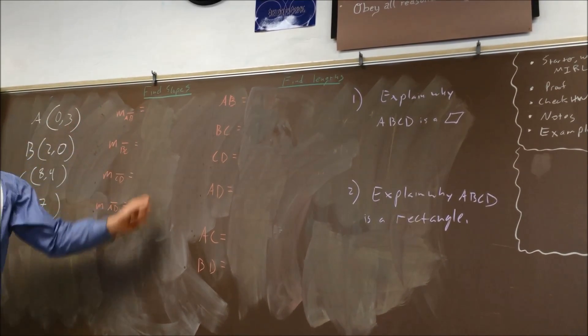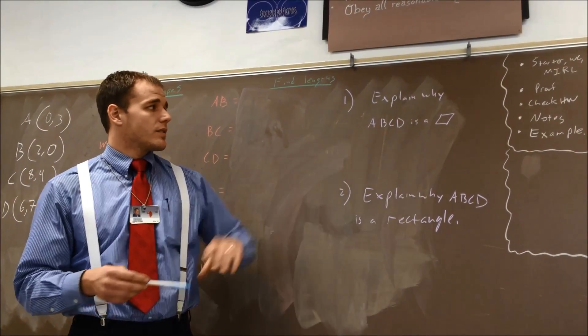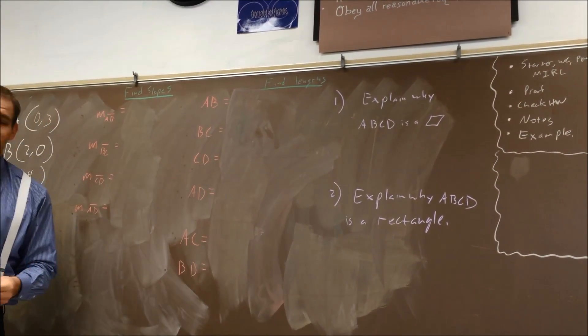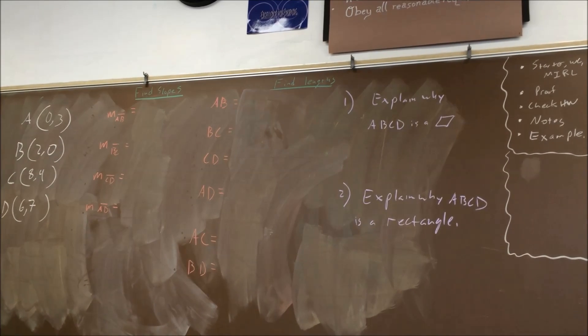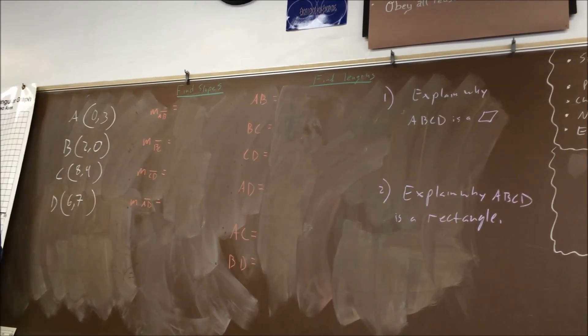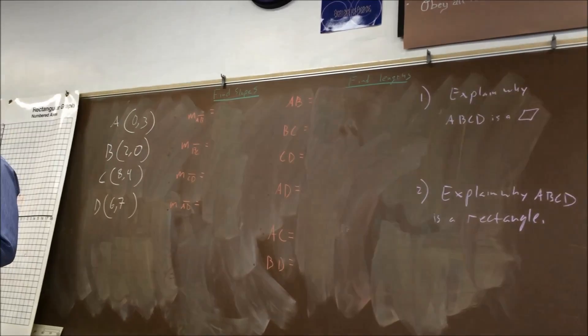Once we find those, we're going to put those on the board up here, and then you're going to explain why ABCD is a parallelogram, and then you're going to explain why ABCD is a rectangle.